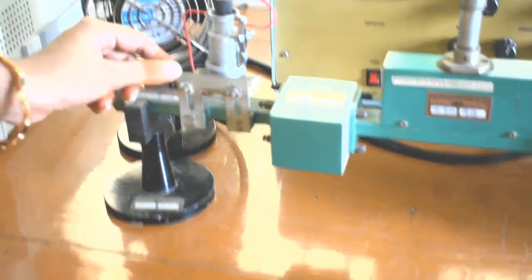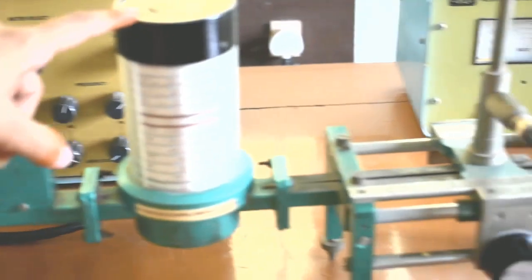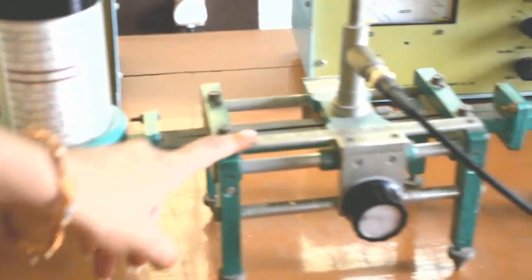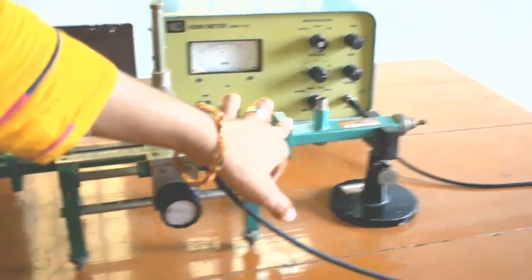Let's go with each and every block. Always a source is followed by an isolator, variable attenuator, frequency meter, slotted line section. And this is the detector mount. We use this to detect the output.